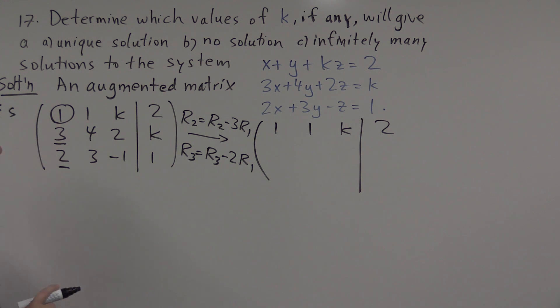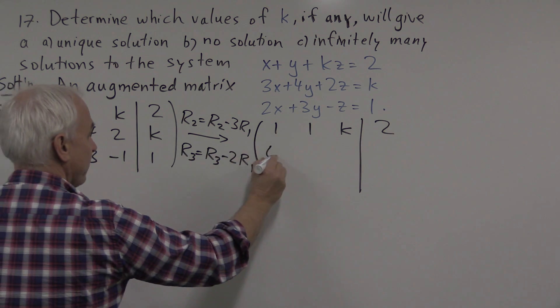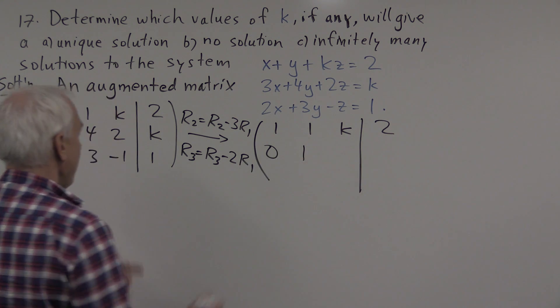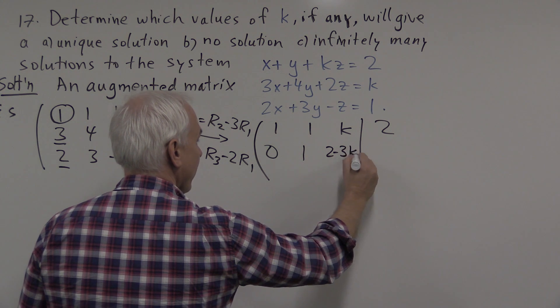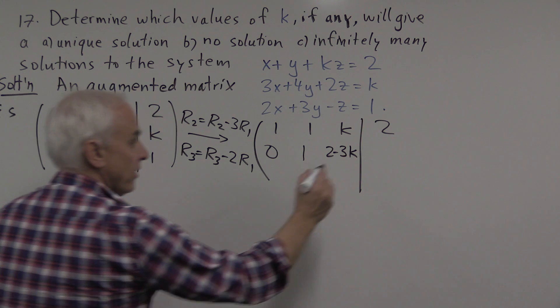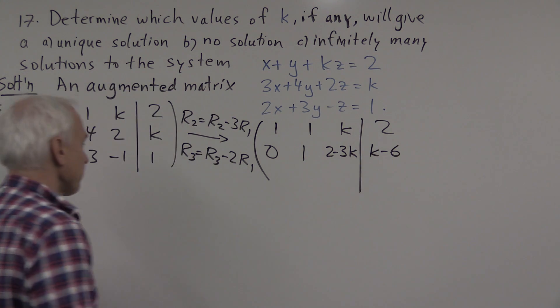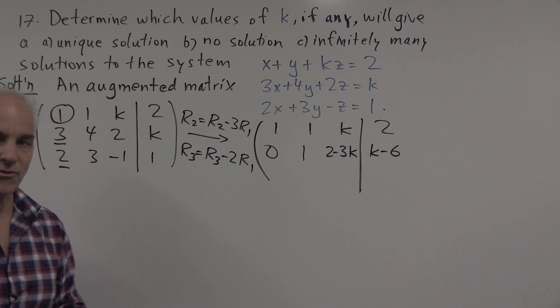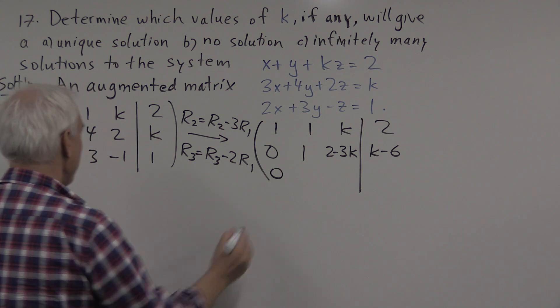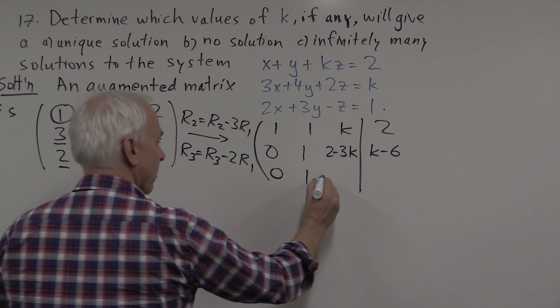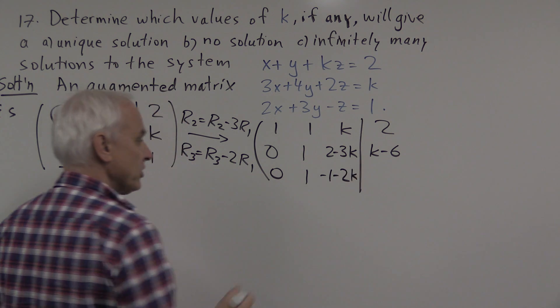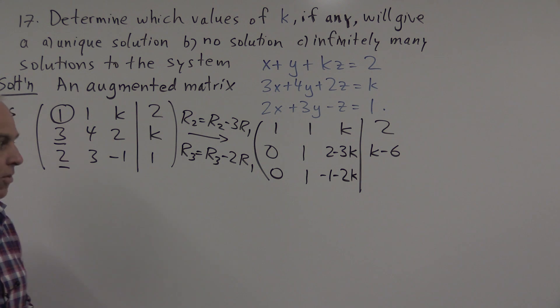If we take row 2, and we subtract 3 times row 1, what do we get? 3 minus 3 times 1 is 0. 4 minus 3 times 1 happens to be 1. And 2 minus 3k is just 2 minus 3k. And k minus 3 times 2 is k minus 6. For the third row, we have to take it and subtract 2 times row 1. 2 minus 2 times 1 is 0. 3 minus 2 times 1 is 1. And minus 1 minus 2 times this will be minus 1 minus 2k. We'll just treat the k as a variable whose value we don't know. And finally, 1 minus 2 times 2 will be minus 3.